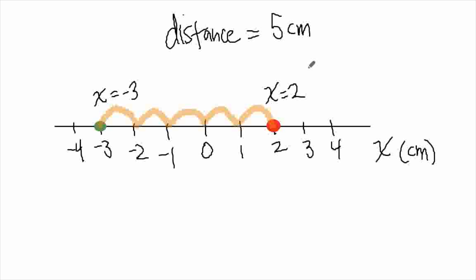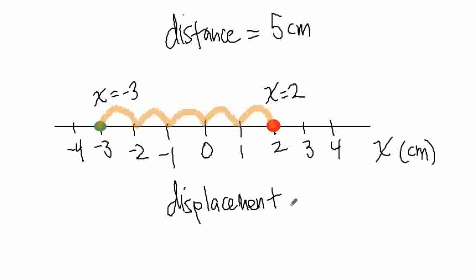Sometimes we want to know the distance as well as the direction. We can use plus and minuses to denote which direction along the x-axis. Once you start also being interested in direction, now you're talking about something called displacement. Distance is the length that you traveled. Displacement we're going to define as the final x value minus the value at the beginning. We could use an 'i' for the initial value.